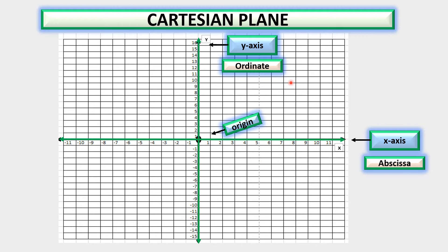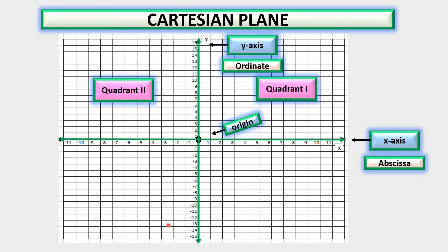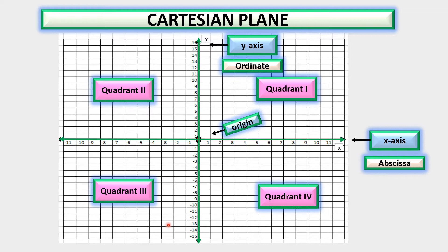Since our plane is divided into 4 regions, these are called quadrants. The quadrants are classified into 4 parts. Starting here, this area is Quadrant 1. This next part is our second quadrant. This part is our third quadrant or Quadrant 3, and lastly you have Quadrant 4. Notice that starting from Quadrant 1, the movement is counter-clockwise.